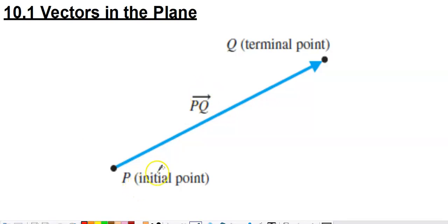A vector always has an initial point and a terminal point. You see the initial point here is point P, the terminal point is point Q. The initial point is where it starts, terminal point is where it ends.